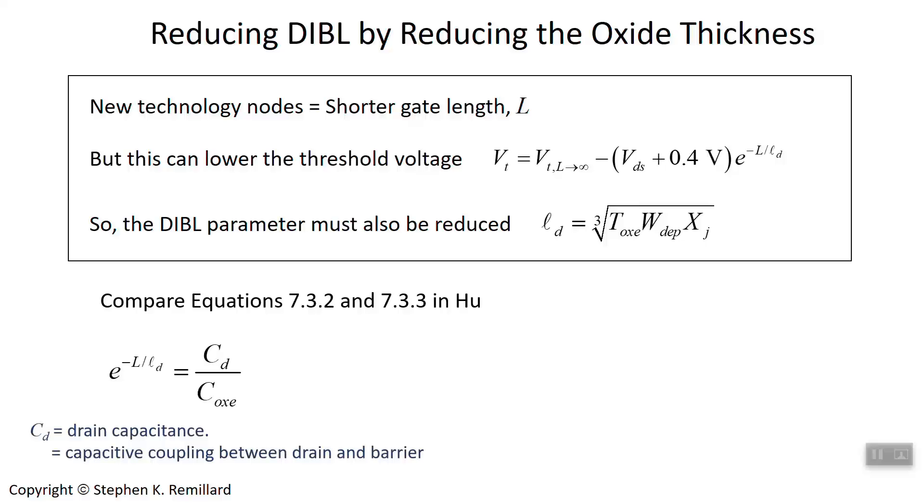The drain capacitance is there because you develop a depletion layer around the drain. If that drain capacitance gets larger, the exponential becomes harder to ignore. The effective oxide capacitance needs to be large to ensure that the exponential term is negligible.